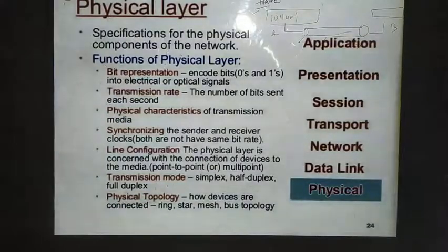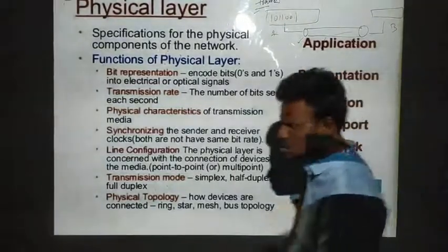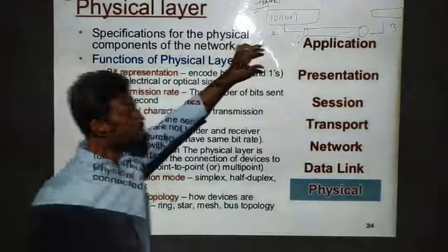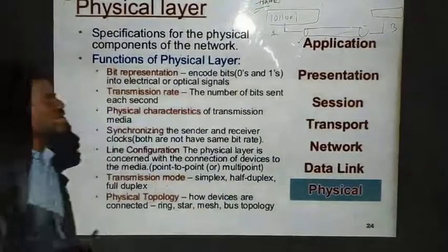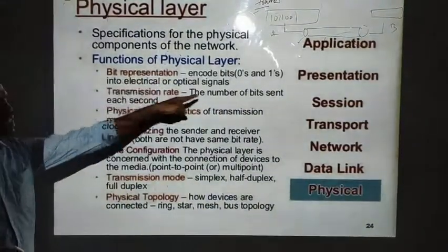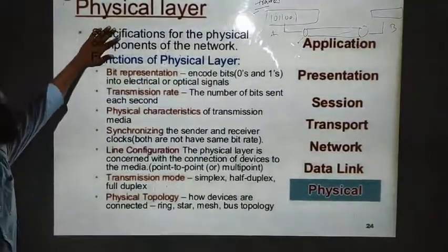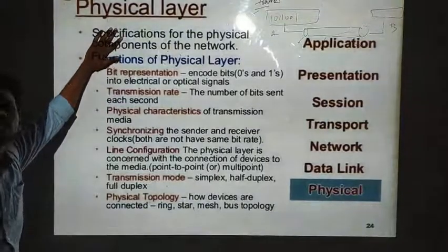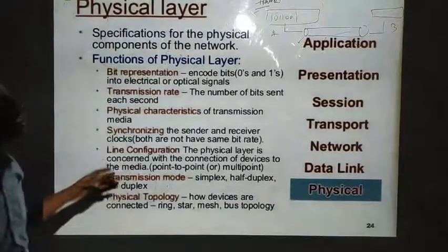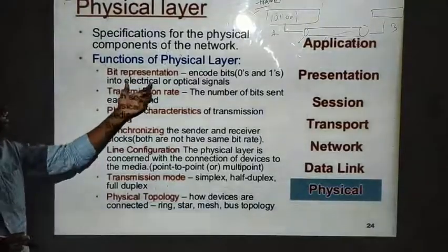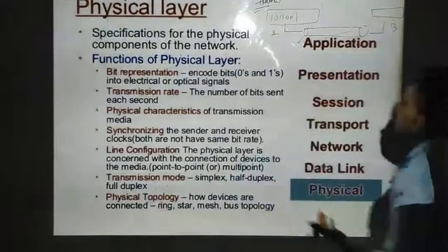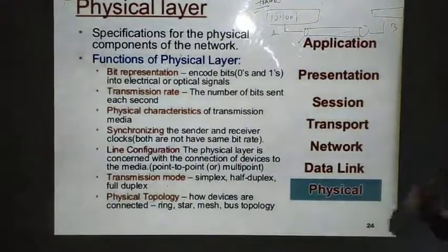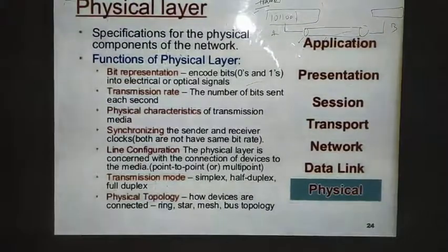The physical layer transmits data from one system to another via a transmission medium — which can be anything. It transmits data in the form of raw bits encoded as 0s and 1s, given as electrical signals or optical signals. Wired transmission uses electrical signals; optical fiber uses optical signals. The physical layer also manages how much electricity is needed to represent 0s and 1s.